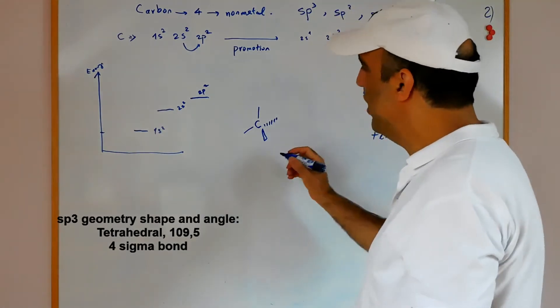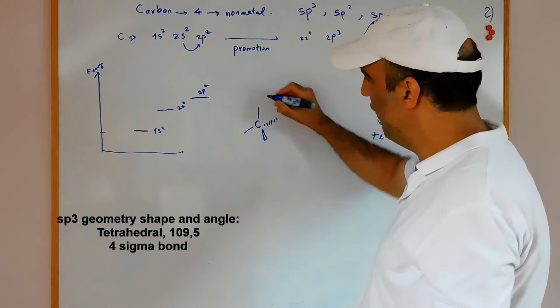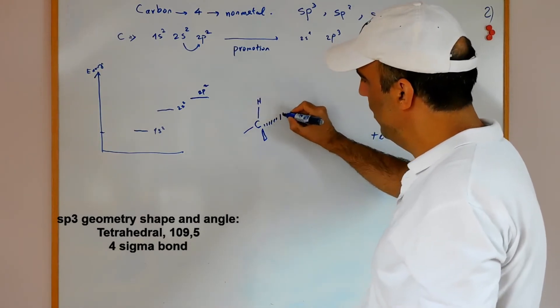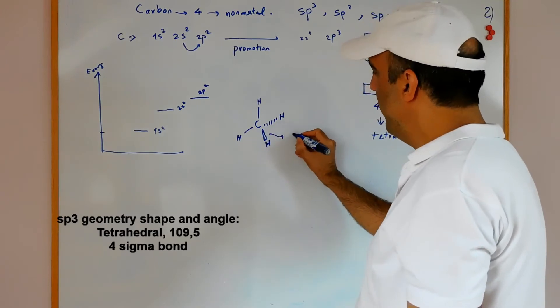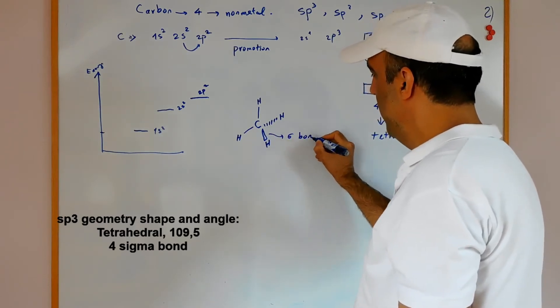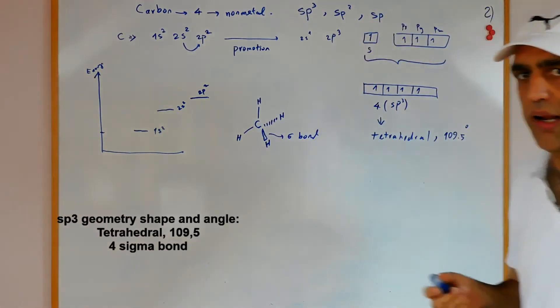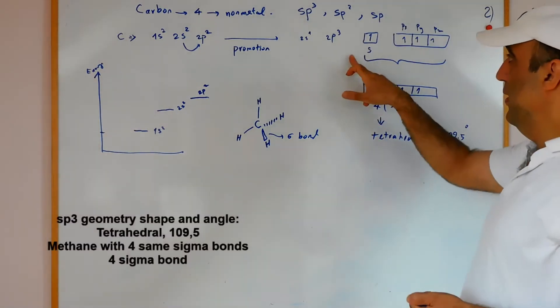This carbon can bond with carbon or other compounds with sigma bonds. All of the bonds will be sigma. For example, if I have methane, in this situation all of the bonds are sigma bonds. All of the bonds are equal.